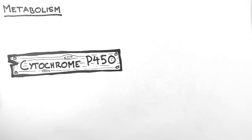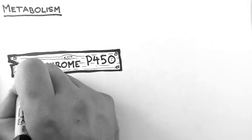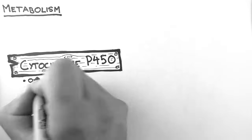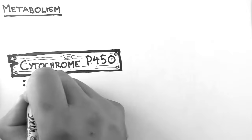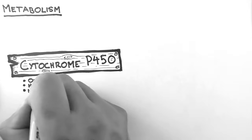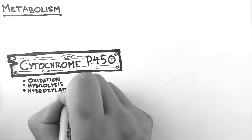Cytochrome P450 enzymes metabolize drugs through a variety of processes. These include oxidation, hydrolysis, and hydroxylation. So let's have a look at how this works, and I'll try and keep the organic chemistry to a minimum.